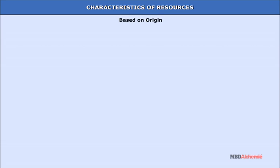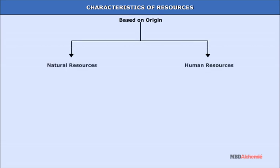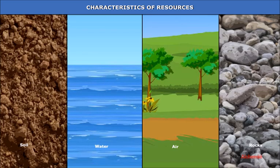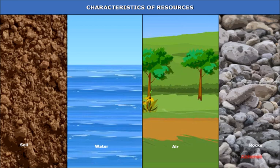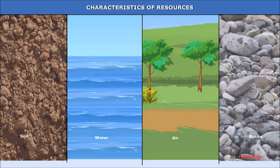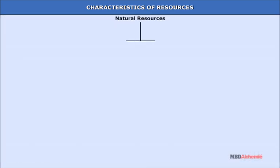Based on origin, resources can be classified into natural and human resources. Natural resources are the gifts of nature which are found useful for making the life of human beings comfortable and worth living. Natural resources include natural vegetation, soil, water, air, minerals and even rocks. These can be of two main types: biotic and abiotic.